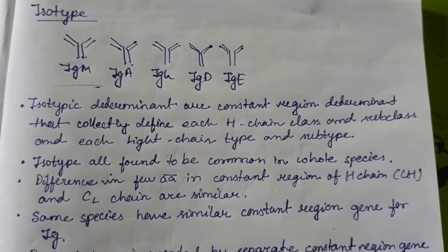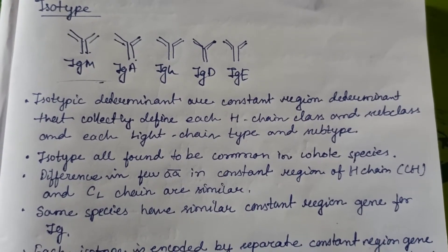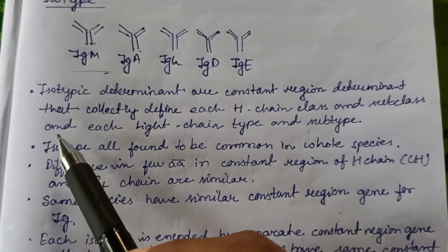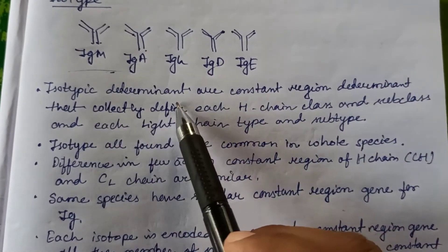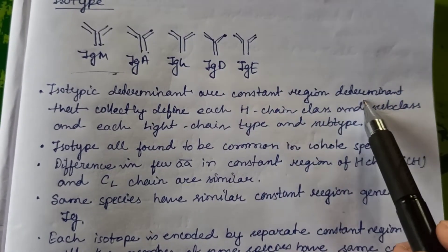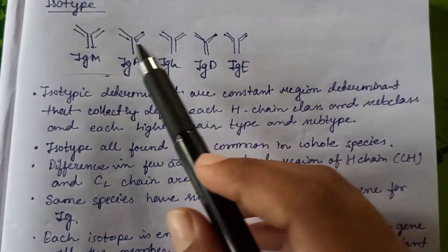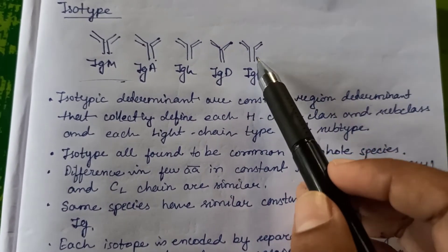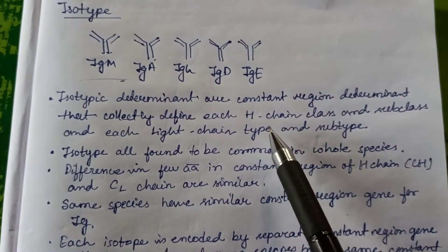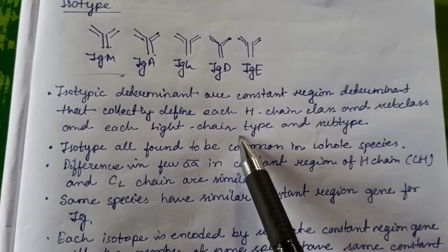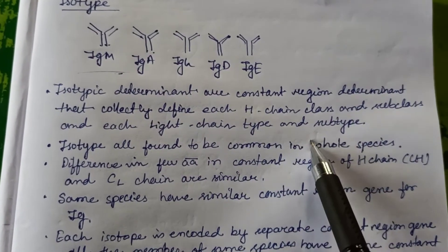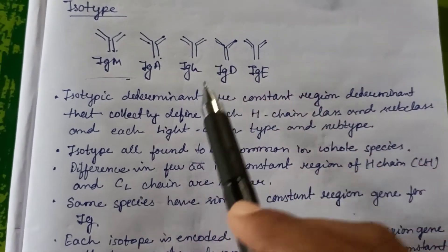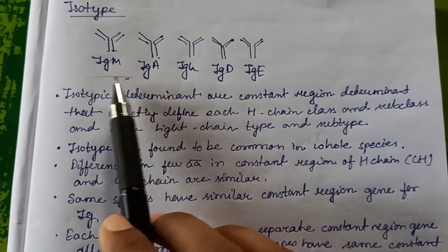In this video I'm going to discuss the isotype, allotype, and idiotype determinants. Isotypic determinants are the constant region determinants — isotype refers to the constant region of the heavy chain and the constant region of the light chain types and subtypes.